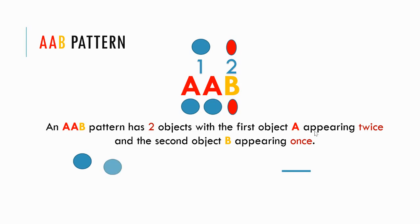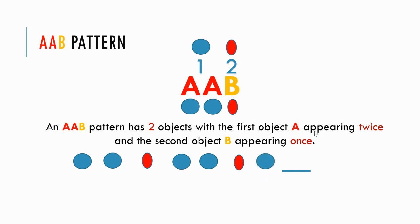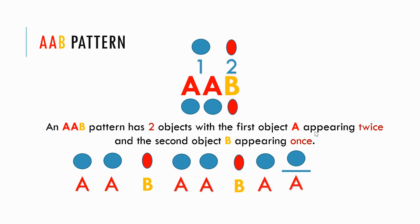Circle, circle, oval, circle, circle, oval, circle — what do you think comes next in our pattern? It is a circle. A, A, B — A, A, B — A, A. You see A appears two times and B appears one time.